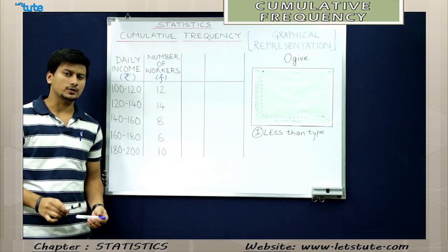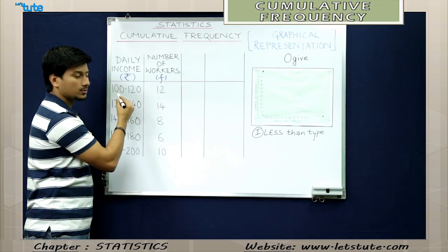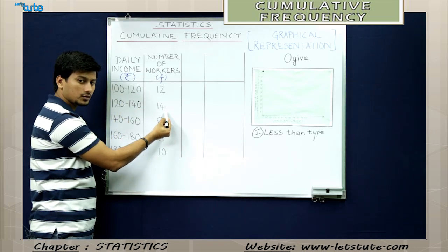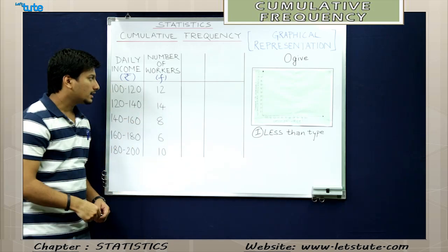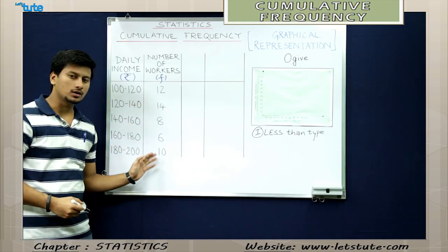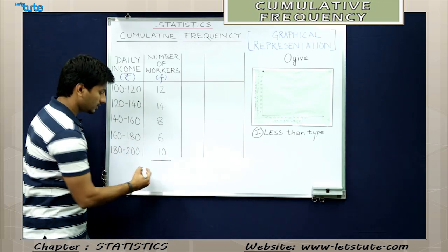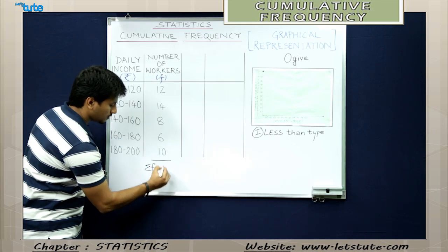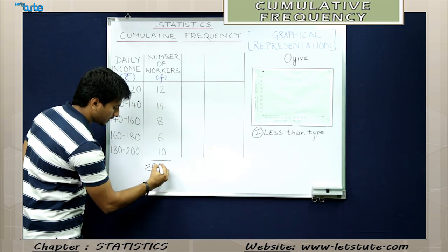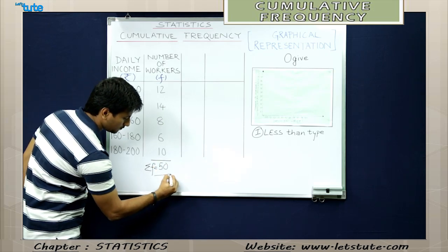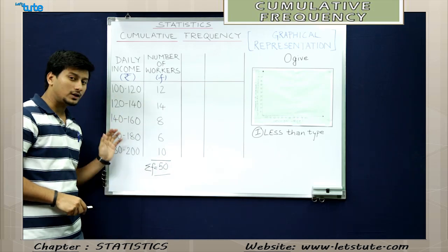Frequency is nothing but the rate at which something occurs. That means 12 workers have a daily income of 100 to 120 rupees, 14 workers have a daily income of 120 to 140 rupees, and so on. Now let us calculate the total of the frequency, denoted as sigma F. So 12 plus 14 plus 8 plus 6 plus 10 gives us 50. This is the frequency distribution.